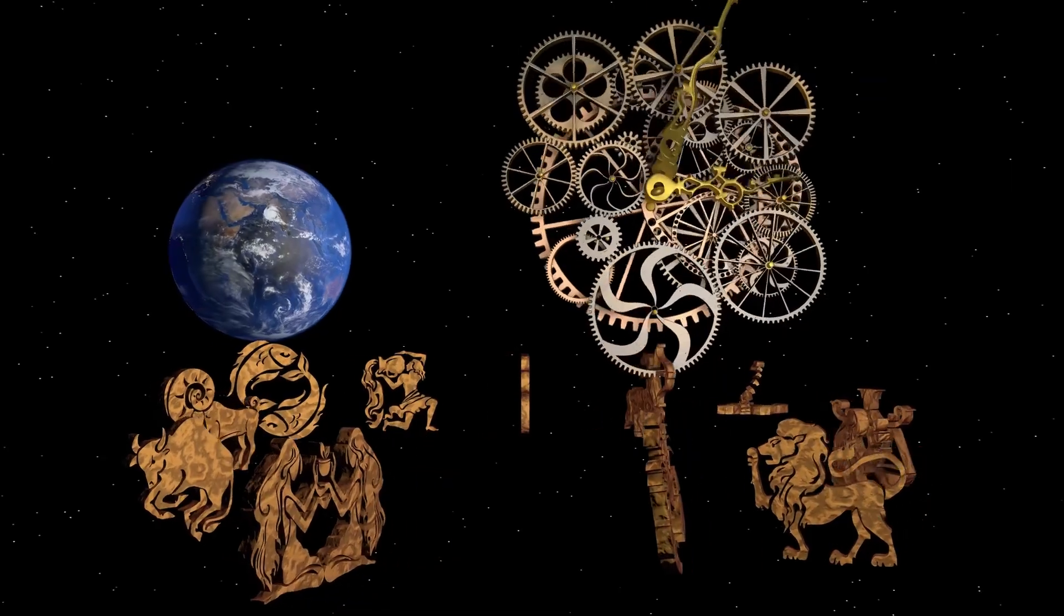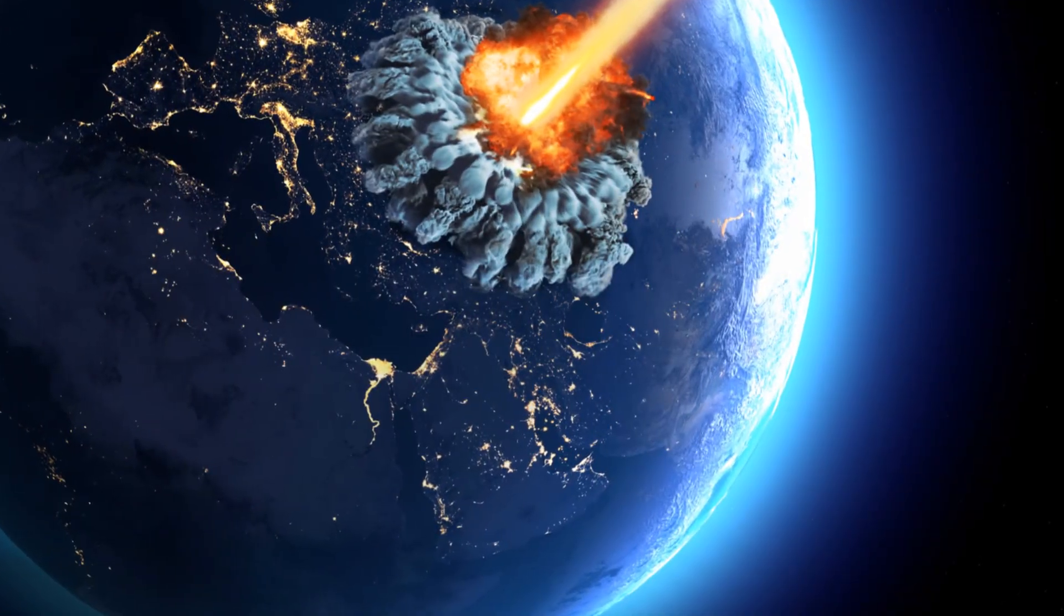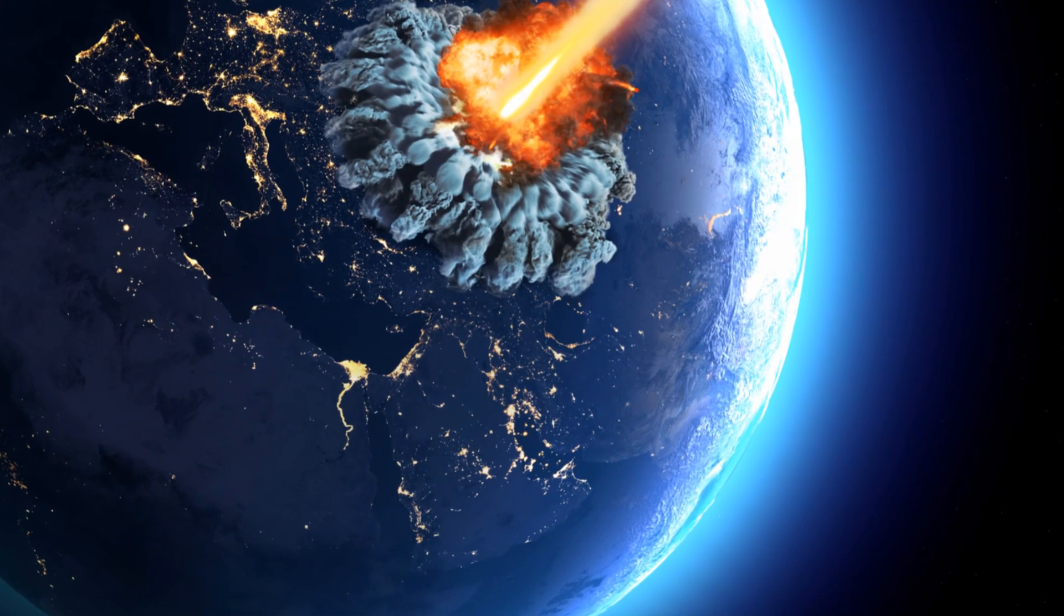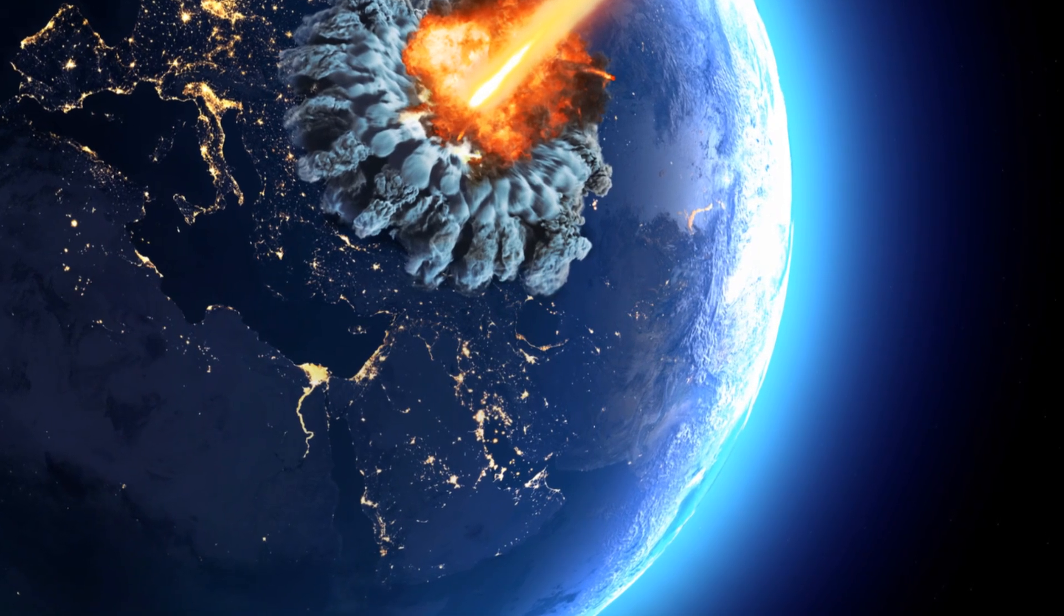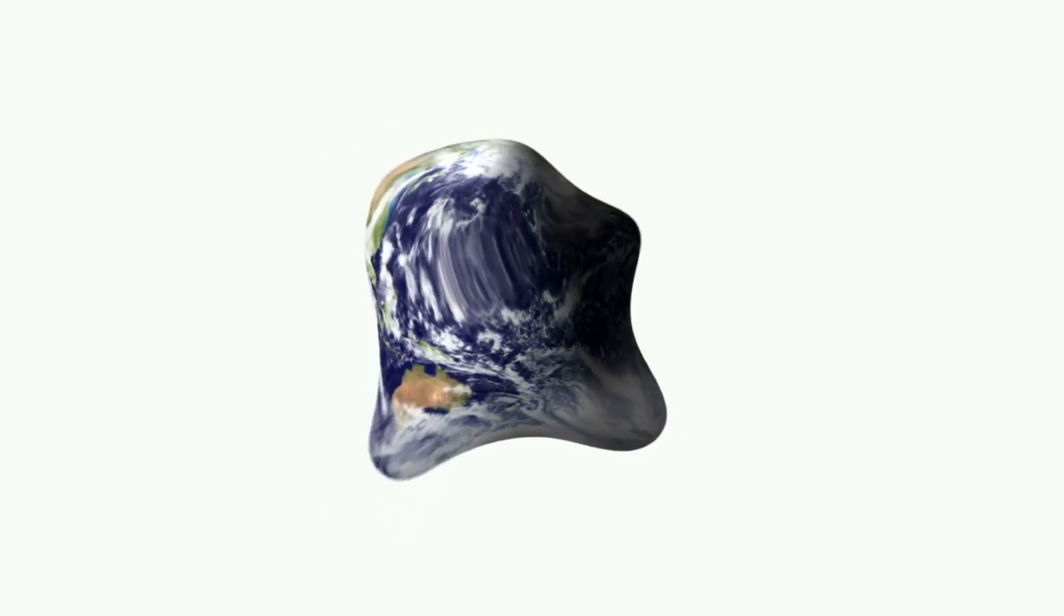Earth's history is a testament to its resilience but also to its capacity for dramatic upheaval. Over billions of years, life on Earth has faced numerous challenges, from asteroid impacts to volcanic eruptions leading to periods of mass extinction. These events, while catastrophic, have played a crucial role in shaping the evolution of life on Earth, acting as a reset button for the planet's biosphere.